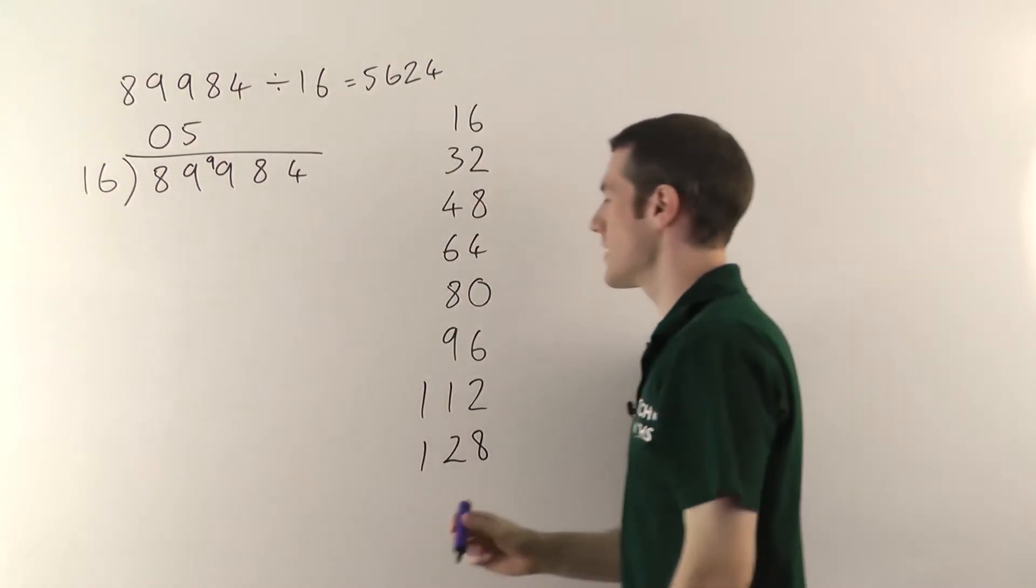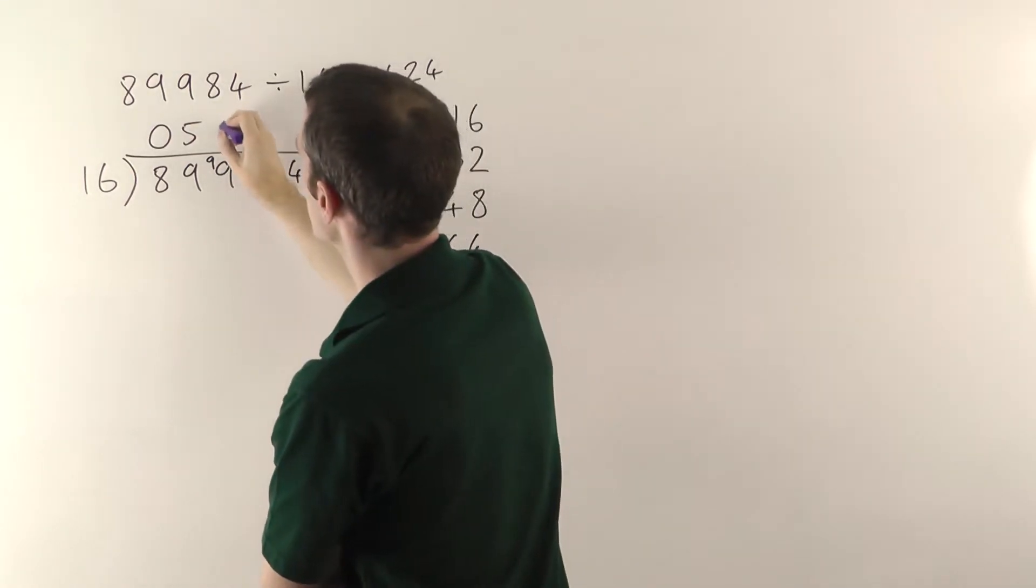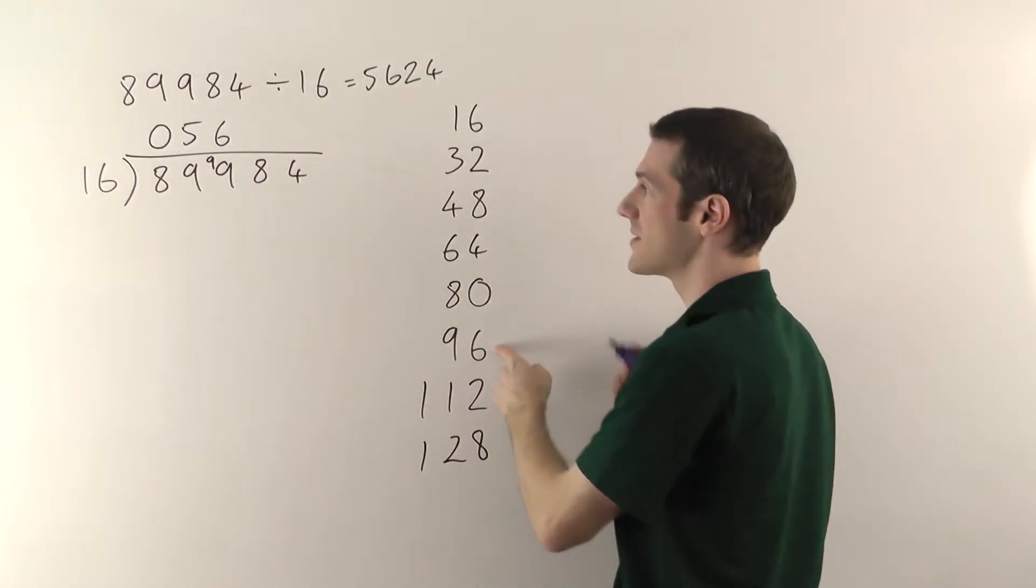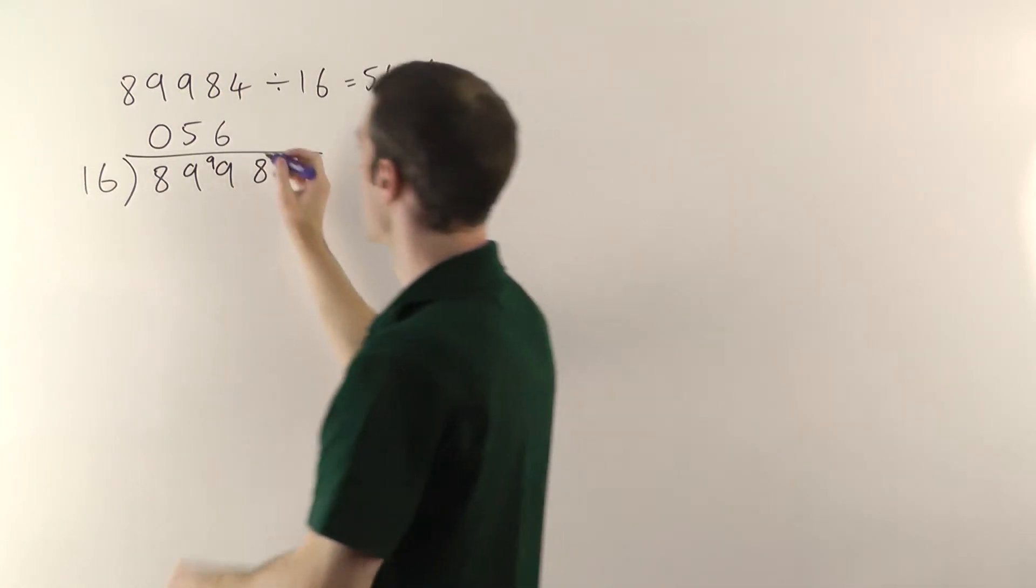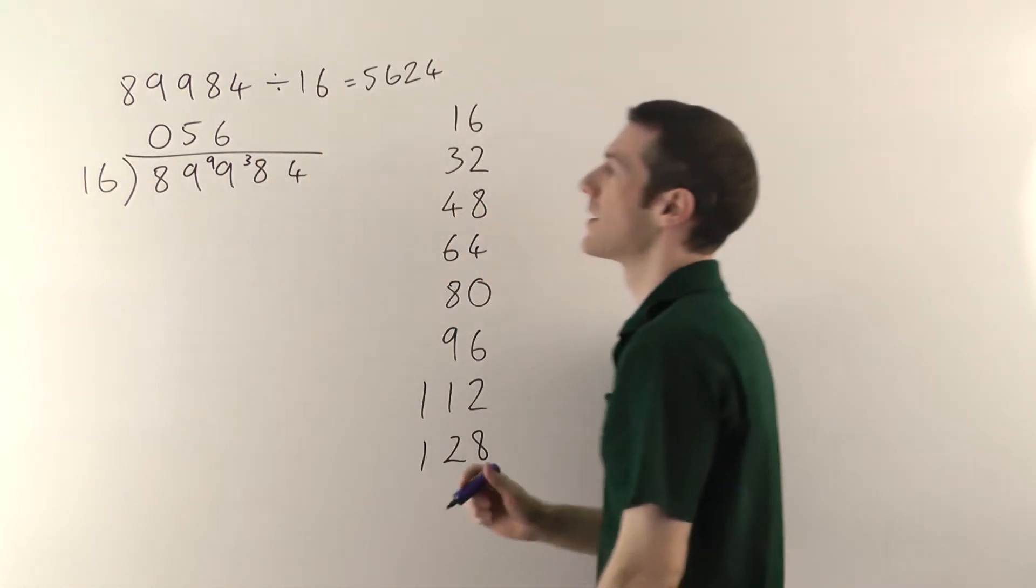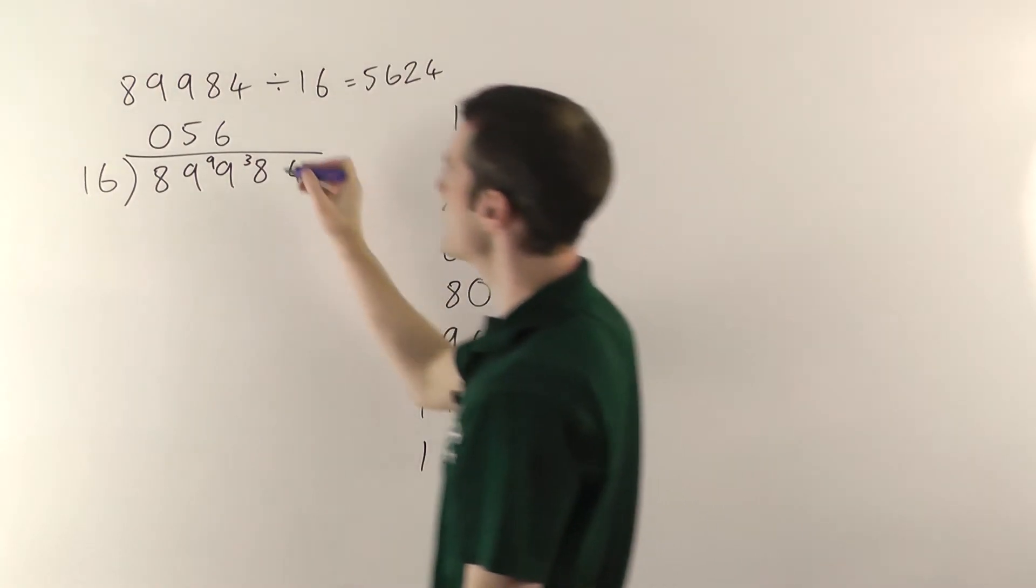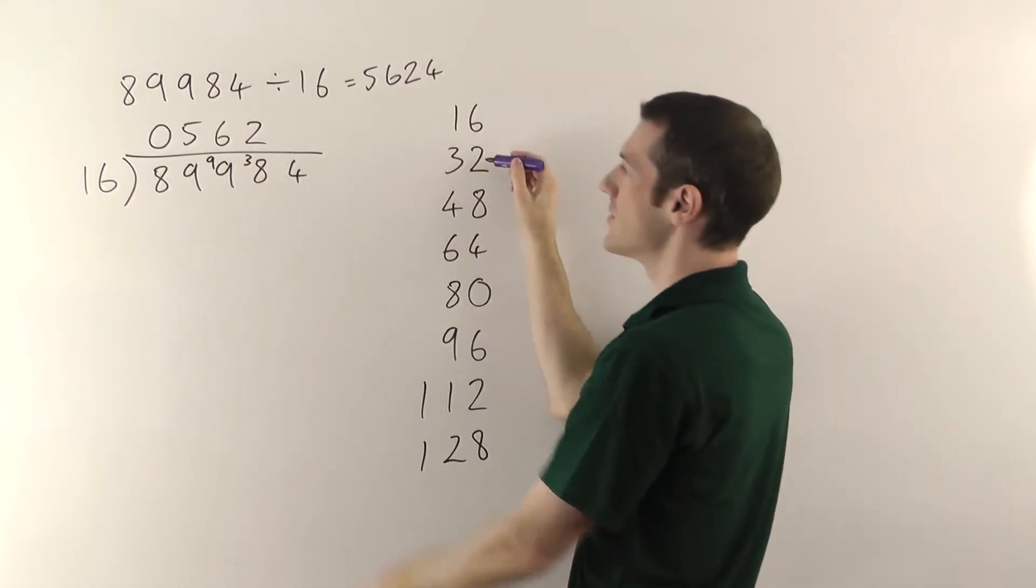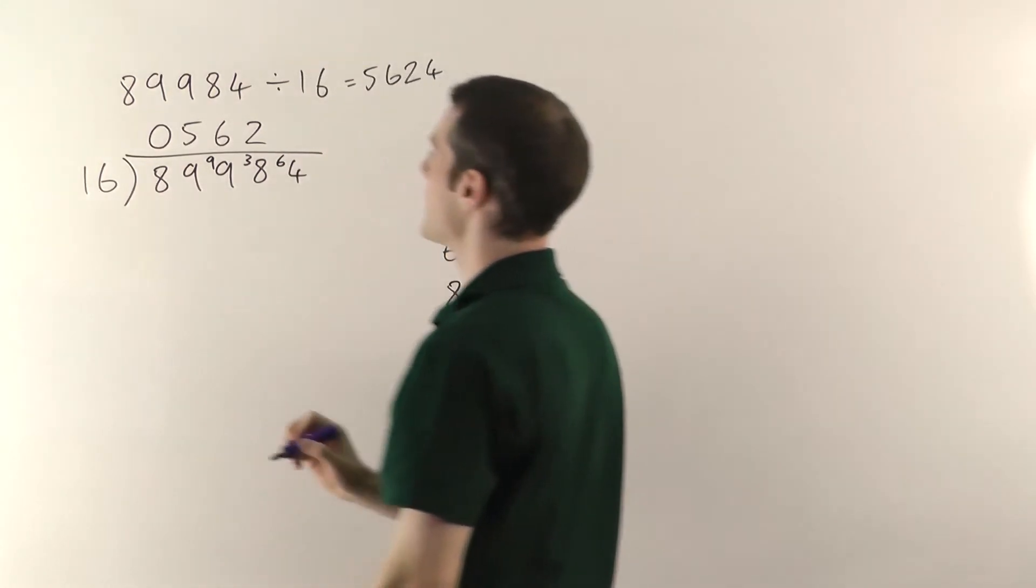Sixteens into ninety-nine, six times. The answer goes on top. From ninety-six up to ninety-nine is three, so the remainder is three. You put that on the next column. Sixteens into thirty-eight, that's going to go two times. From thirty-two up to thirty-eight, the remainder is six. So you stick that on the next digit.